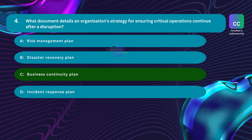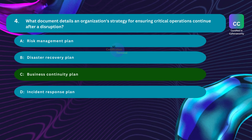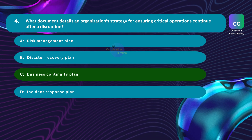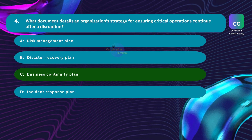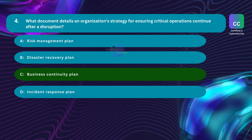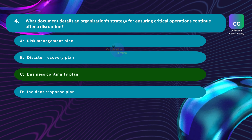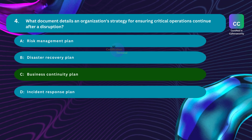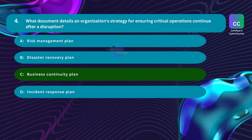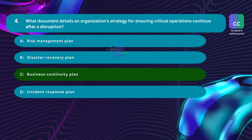A business continuity plan serves as the overarching strategy for ensuring an organization's ability to function during and after disruptions. It considers various potential threats, outlines steps to maintain critical operations, and includes procedures for resuming normal functions after a disruption has passed. A BCP incorporates elements from risk management, disaster recovery, and incident response to provide a comprehensive framework for organizational resilience.